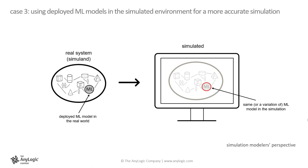Case 3, using deployed ML models in the simulated environment for a more accurate simulation. A simulation model should replicate the rules of a real system, a fact that also applies to any embedded AI solutions that already exist in the system. Rules and behaviors that are direct result of a system's embedded AI solutions should also be incorporated into the simulation. The most natural way of achieving this is to directly embed AI solutions into the simulation. For example, if a call center has an automated system based on an ML model that assigns call to specific operators based on the call's estimated complexity, that ML model, or a variation of it, should be incorporated into the simulation model of the call center.